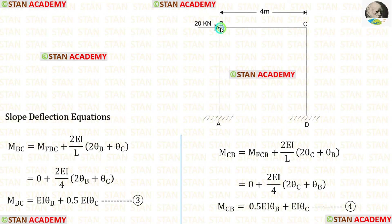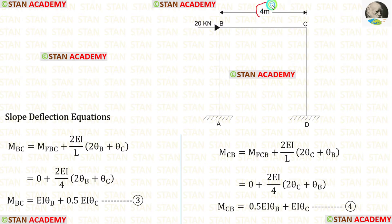Now let us make the slope deflection equations for beam BC. In the equations, the fixed end moments are zero and the length of BC is 4. Finally, in beam BC we have made two equations.